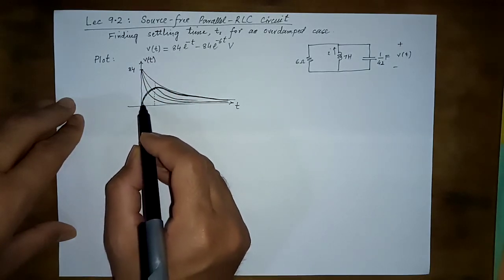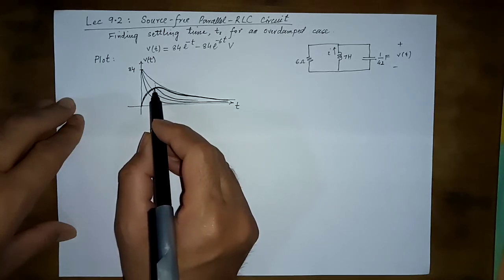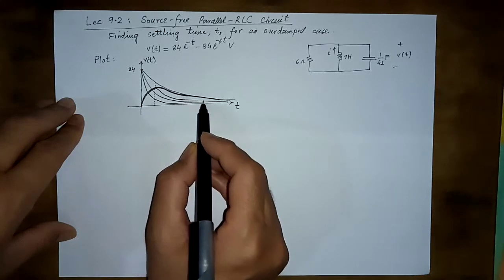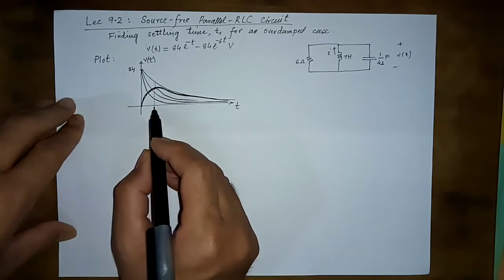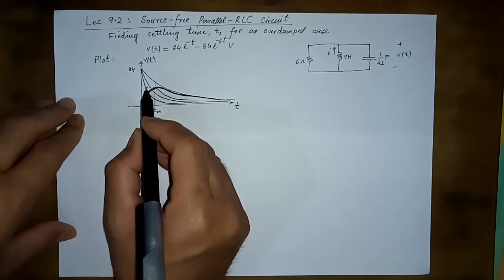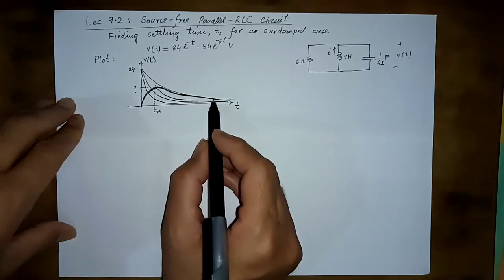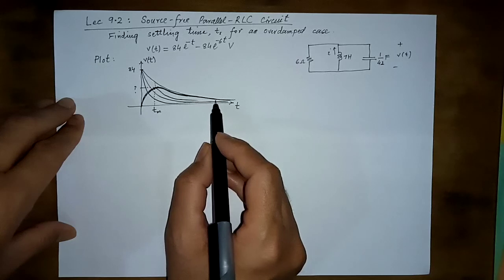Initially it will rise because the difference becomes greater, but with time the difference between these two will also become smaller and smaller, so it will come down. This is the time for the maximum value. Here it is maximum, some value here.